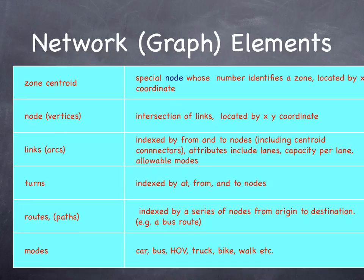There's a zone centroid that represents each transportation analysis zone, which has an x-y coordinate. There are node vertices, which indicate the intersection of links, and they're located also by x-y coordinates. There are links, which are identified by the from-node and the to-node. There are turns, which are identified by a sequence of three nodes. There are routes, which are a sequence of multiple nodes — for instance, a bus route. And there are modes, which indicate which types of technology are allowed on each individual link.